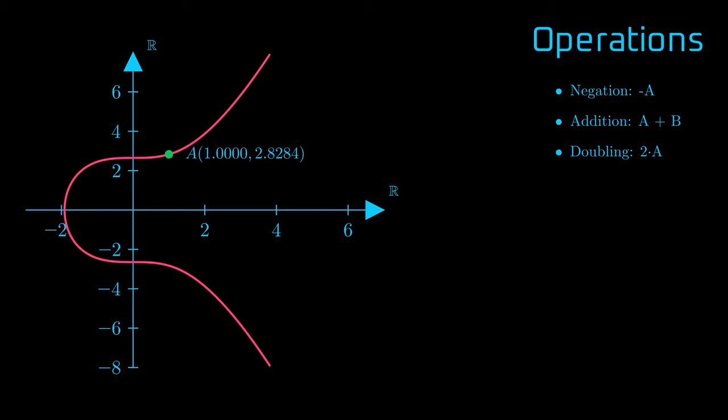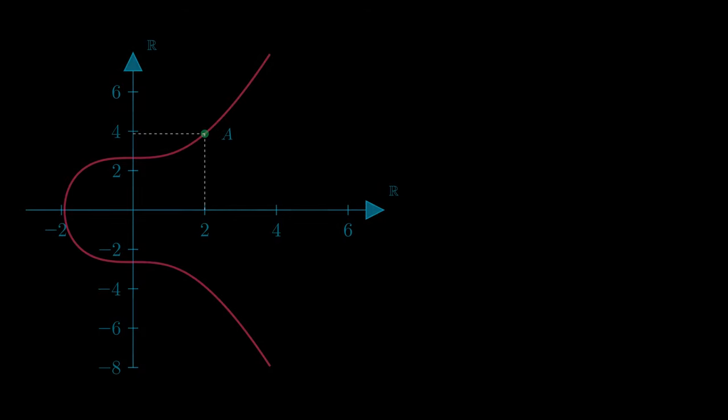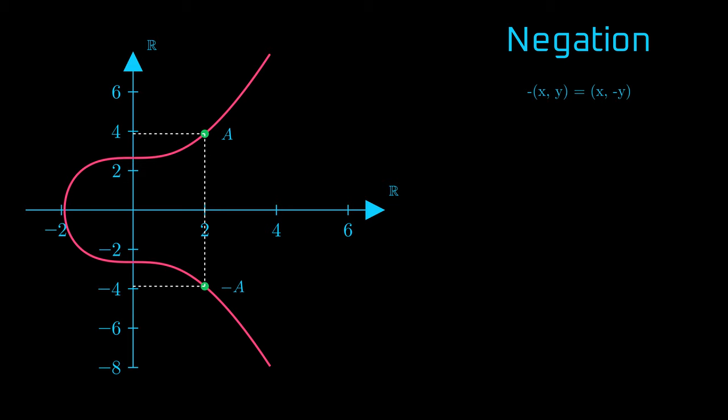Namely, we would like to have three operations: negating a point on the curve, adding two points on the curve, and doubling a point. So let's define these operations. To negate a point, we take its reflection about the x-axis. To do so mathematically, we simply take the x and y coordinates and negate the second.